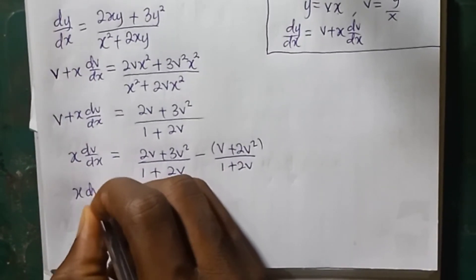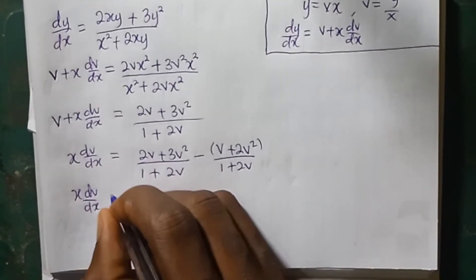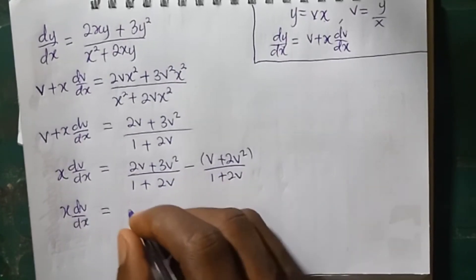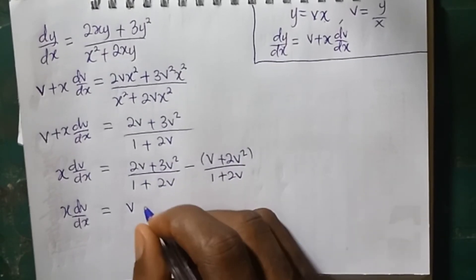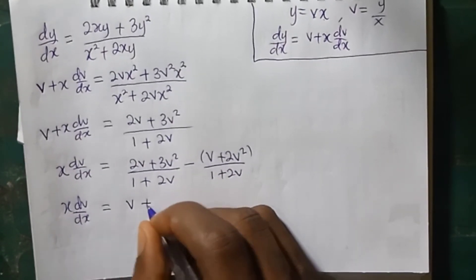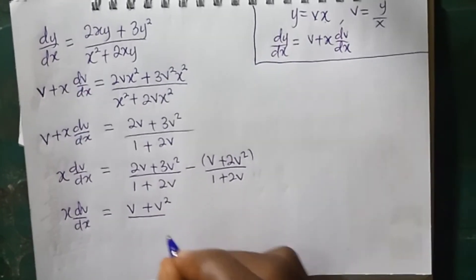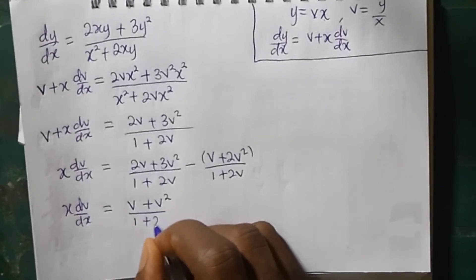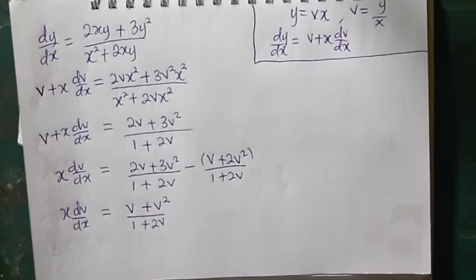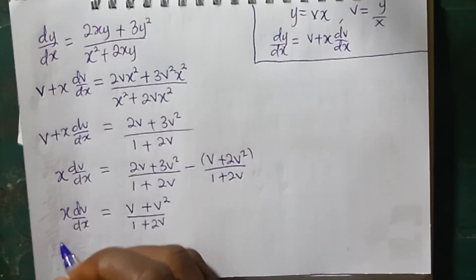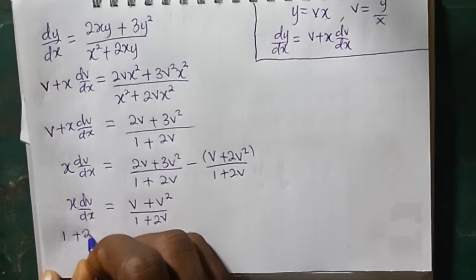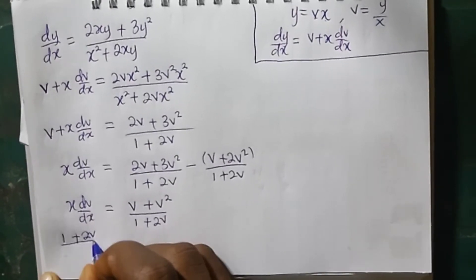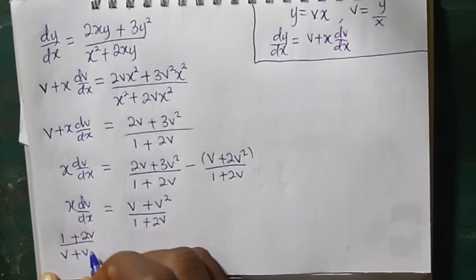So x dv over dx is now equal to: 2v minus v is v, and 3v squared minus 2v squared is v squared, all divided by 1 plus 2v. Therefore, we are going to multiply both sides by the reciprocal of this term, giving 1 plus 2v divided by v plus v squared.